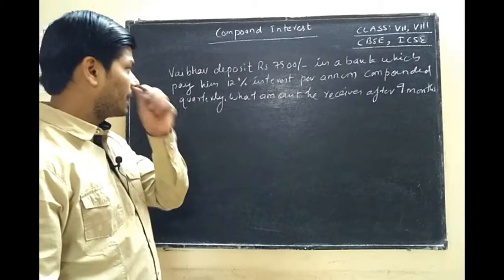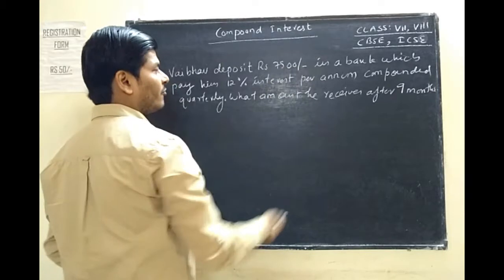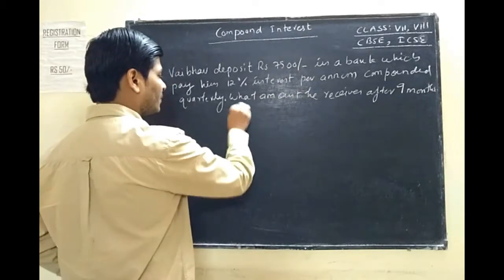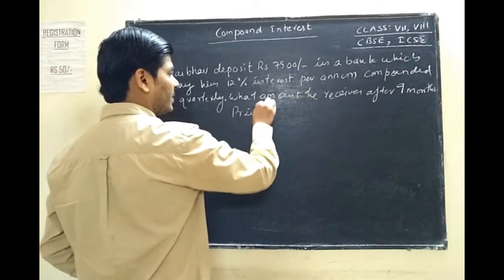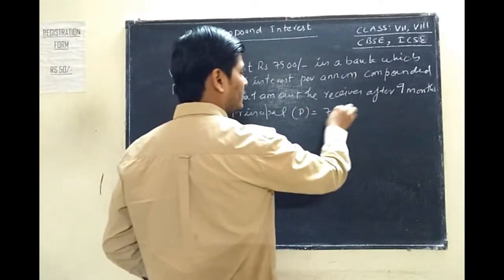In quarterly compounding, what will the amount be? The concept is that the sum of money is the principal. According to the question, the principal given is Rs. 7500.